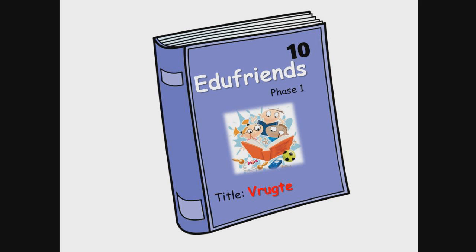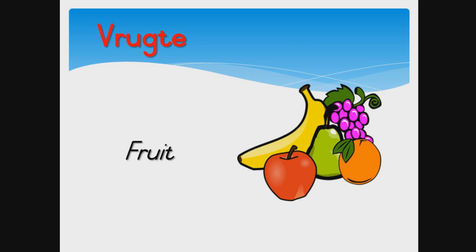Hi everybody, welcome to the EduFriends Afrikaans reading course. This is book 10 of phase 1. The title is Vrugte, which in English means fruit.